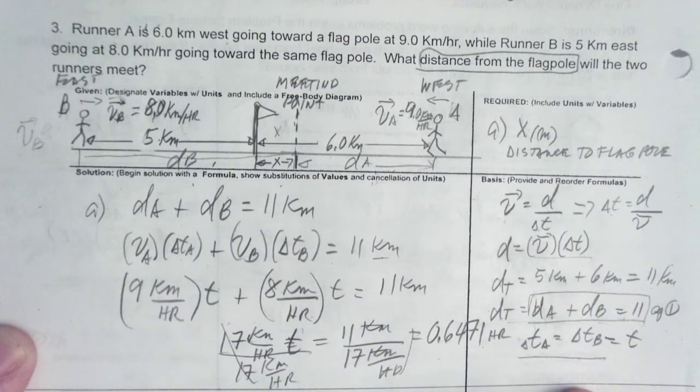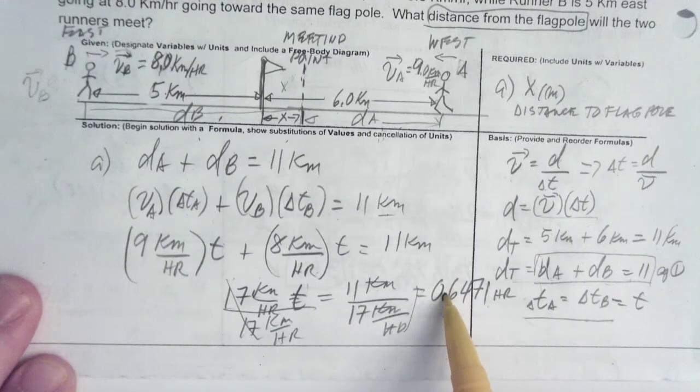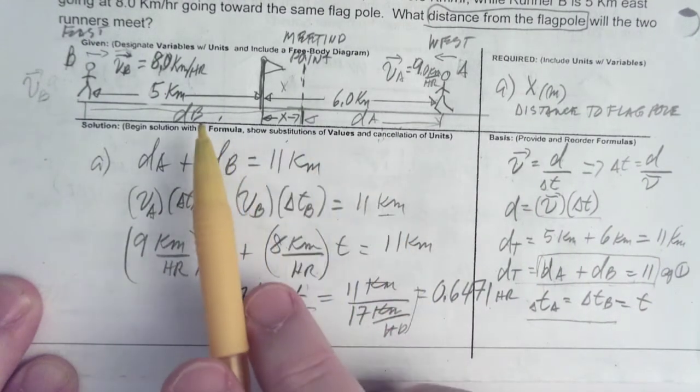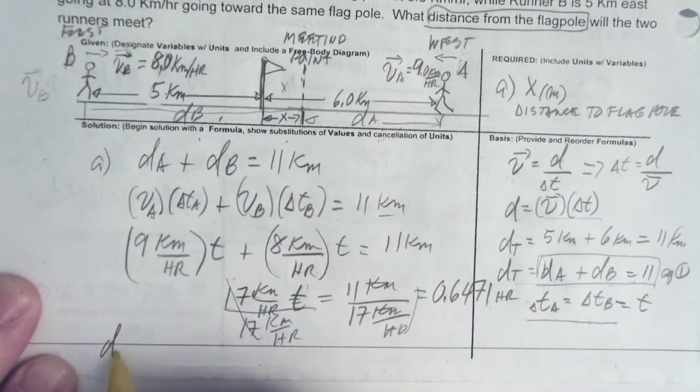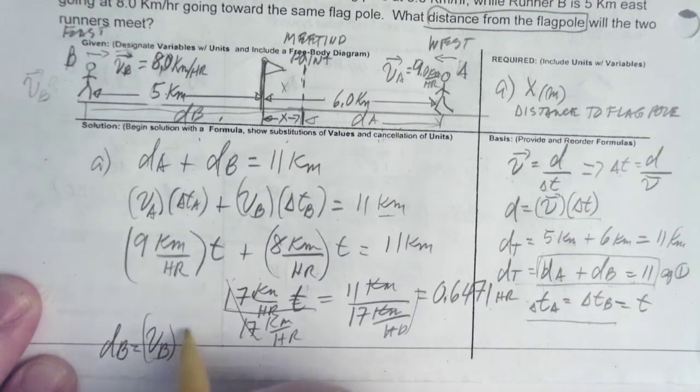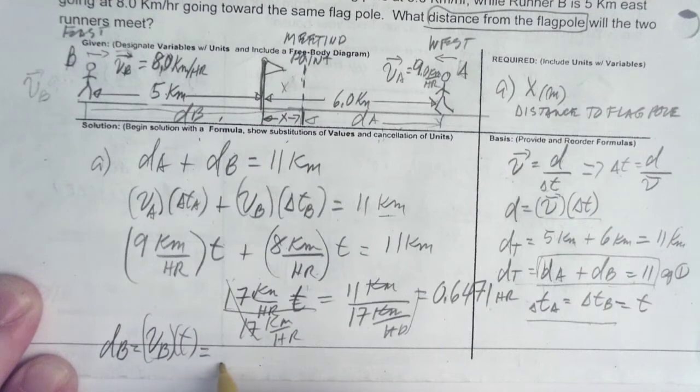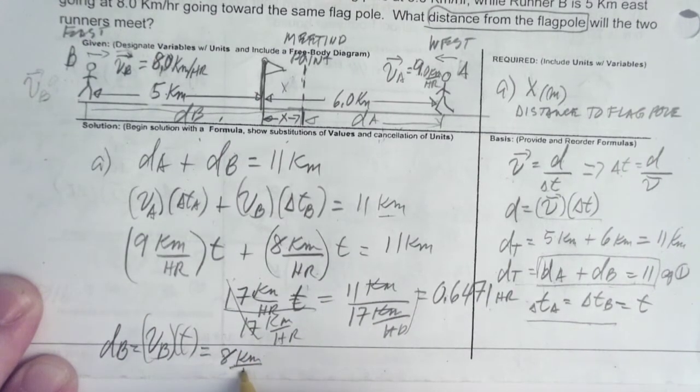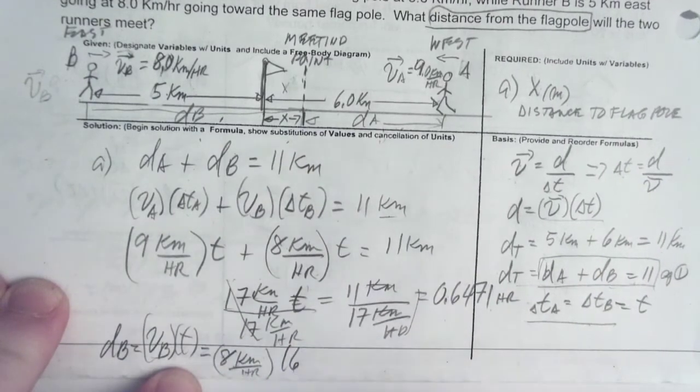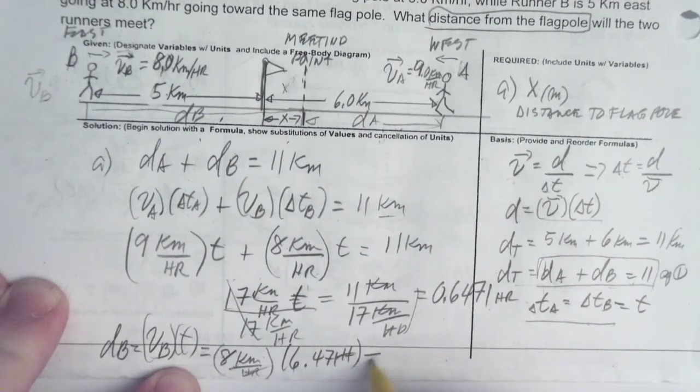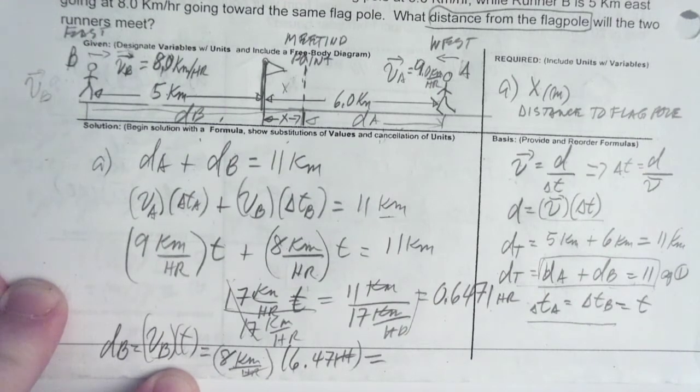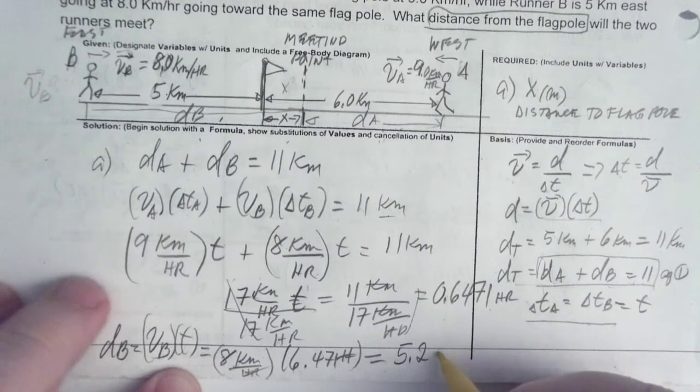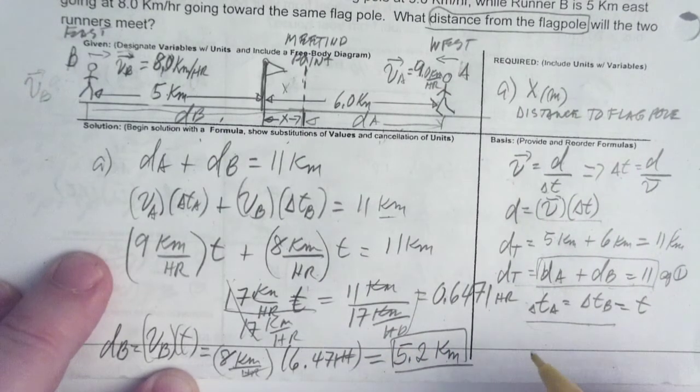So, what do we do now? Well, first, we have to find out what is the distance traveled by B. So, DB is equal to VB times T, which is equal to VB is 8 kilometers per hour times 6 point hours. Cancel, cancel. This is going to be 5.2 kilometers.